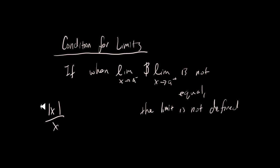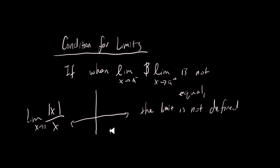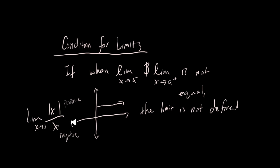Here's an example: consider the limit of |x| over x as X approaches zero. For positive values of X, the result is positive Y. For negative values of X, the absolute value makes the numerator positive but the denominator is still negative — so the result is negative. Approaching zero from the right gives +1, and from the left gives -1.